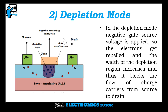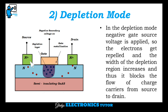Next is Depletion Mode. In the depletion mode, a negative gate-source voltage is applied, so the electrons get repelled and the width of the depletion region increases. Thus, it blocks the flow of charge carriers from source to drain.